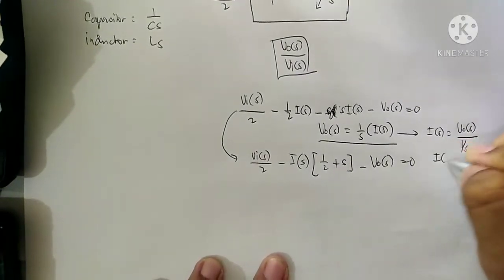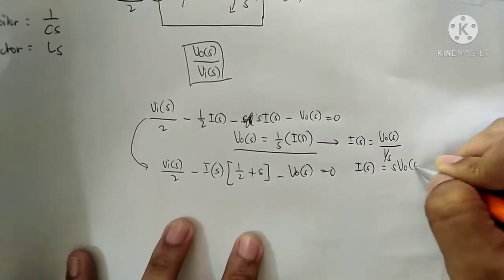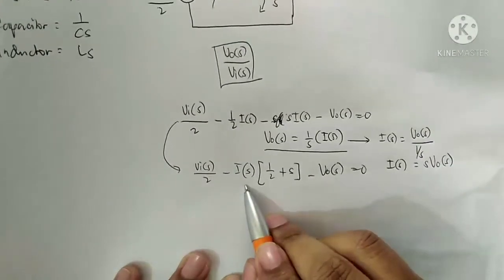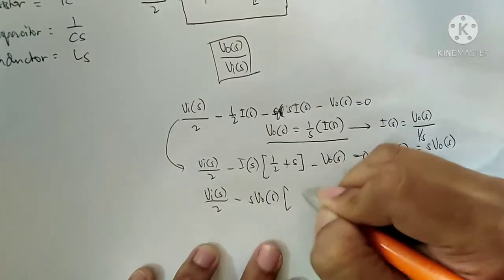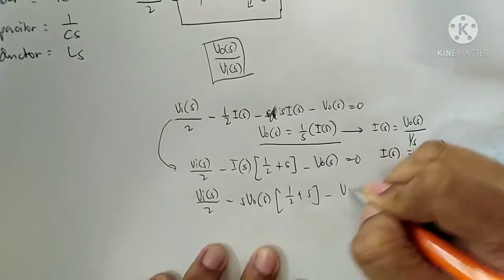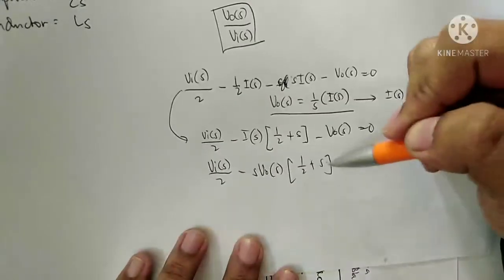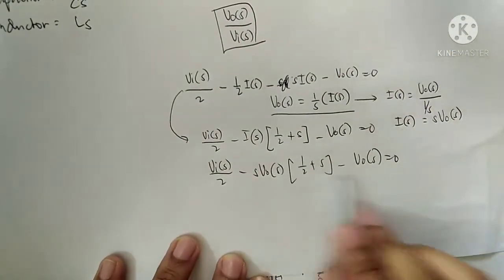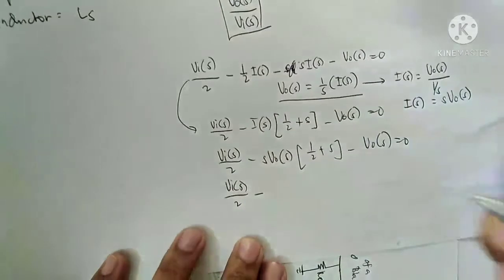Therefore, I(S) equals S times Vo(S). Substituting: Vi(S) divided by 2 minus S·Vo(S) times one-half plus S, minus Vo(S) equals zero. We'll find the ratio. Since Vo(S) is common, we can factor it out. Therefore, Vi(S) divided by 2, then factor out the Vo terms.